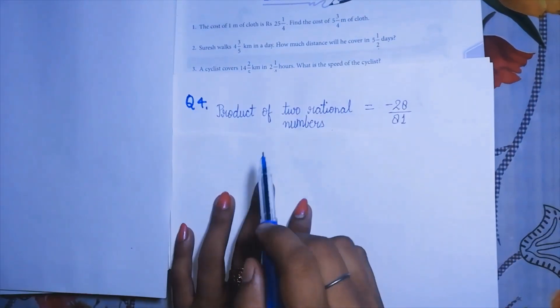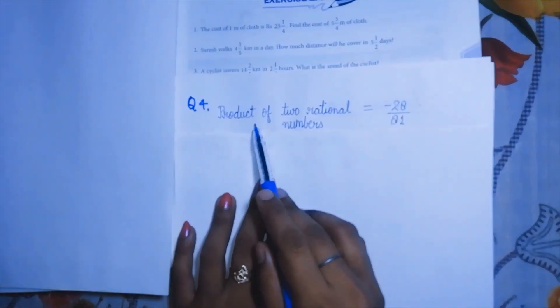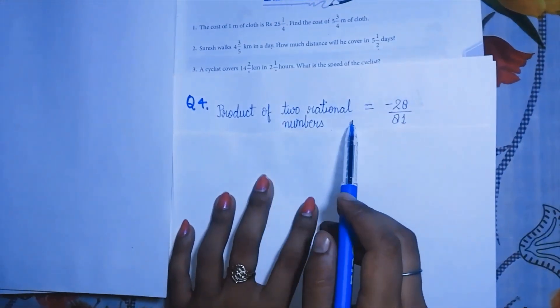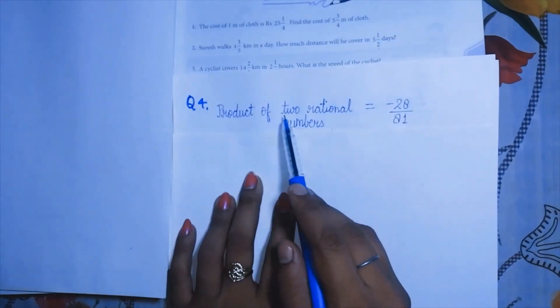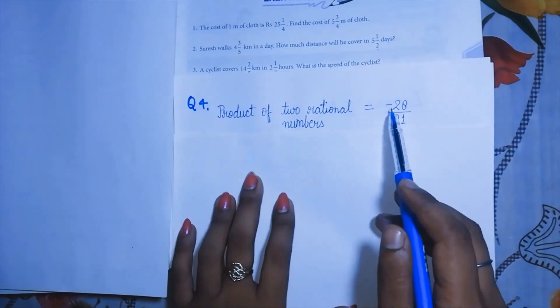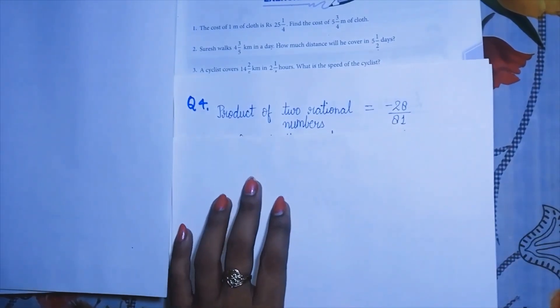Let's see the solution. I have noted down what is given: the product of two rational numbers is minus 28 by 81, and one of the rational numbers is minus 4 by 15.